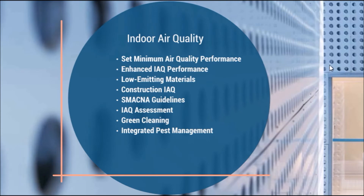Enhanced IAQ performance involves setting a permanent entryway system 10 feet into or out of a building to collect dirt and debris — basically a permanent floor mat. For exhaust, we want to minimize exposure from garages, laundry rooms, and copy rooms. For filtration, vents that supply outdoor air must have particle filters meeting a MERV standard of 13 or higher. For ventilation, we want to increase it 30% above the minimum, monitor CO2, and have naturally ventilated spaces under CIBSE AM10 guidelines.